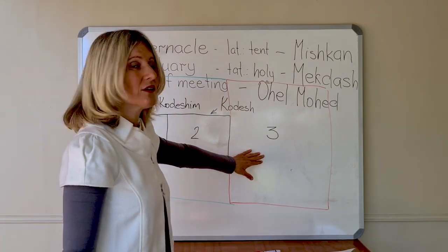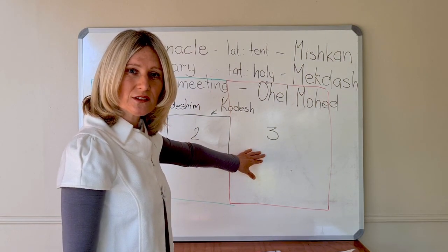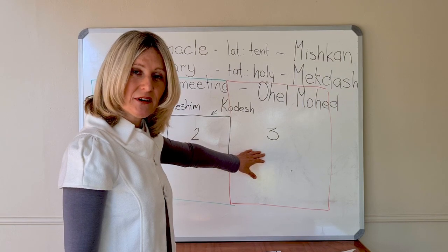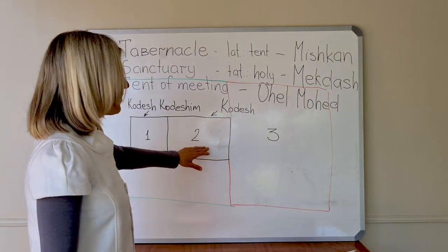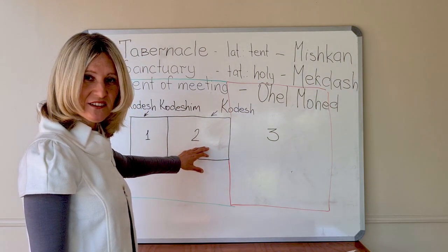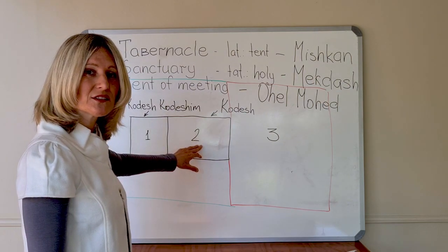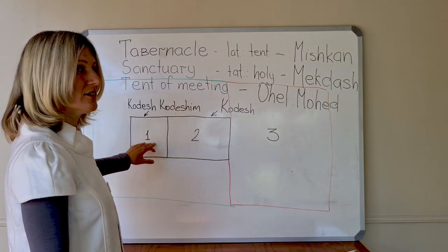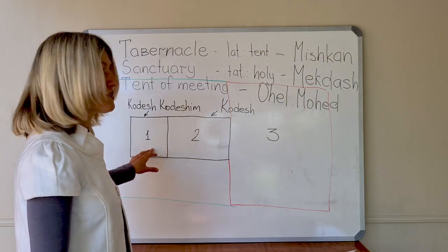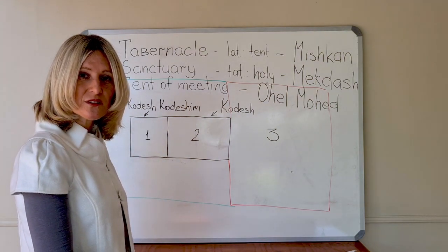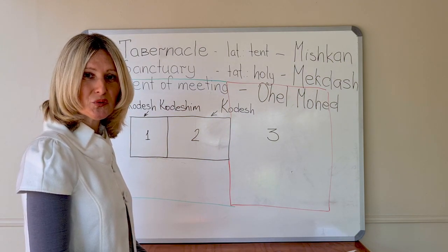In the first part — the court or Ohel Moed — priests and Levites could enter. In the second part, only priests could enter and do service. And the third one, the Most Holy Place, which no one could ever enter, was serviced only by the High Priest — only once a year, on Yom Kippur.